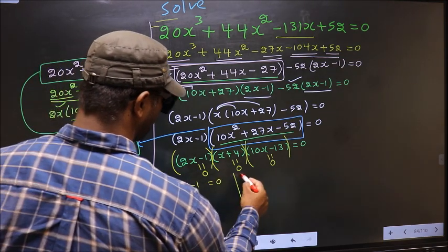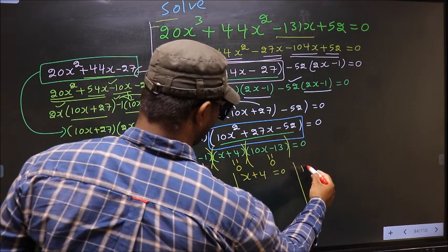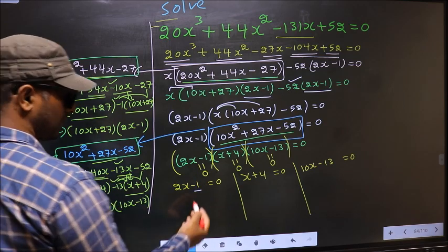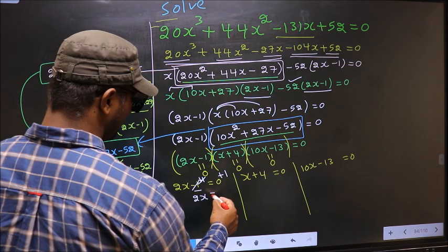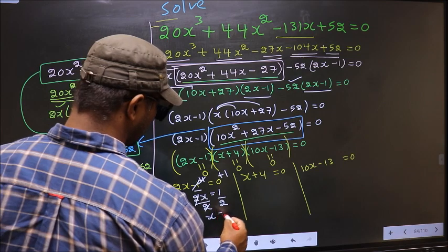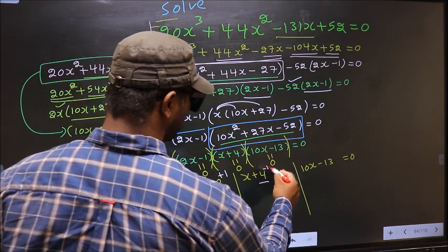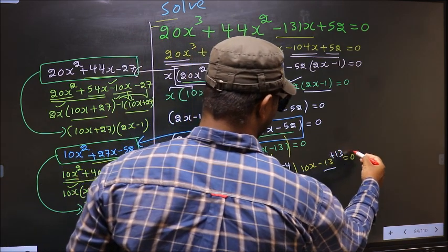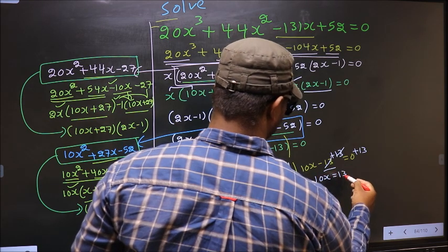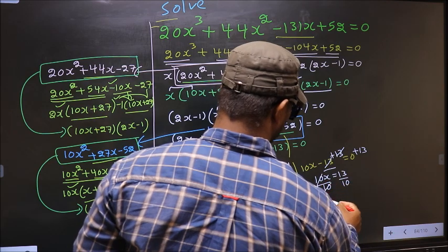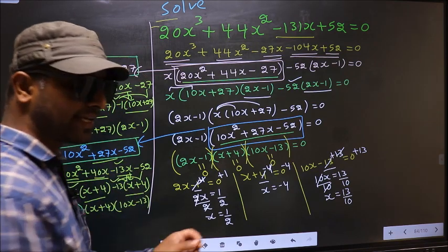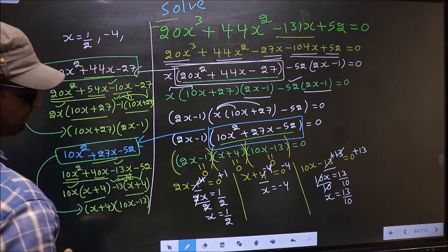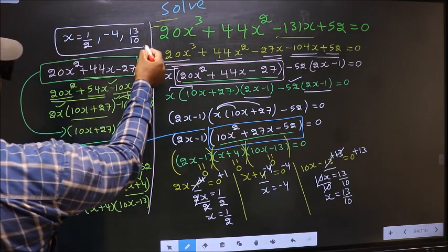Setting 2x - 1 = 0: add 1, then divide by 2, giving x = 1/2. Setting x + 4 = 0: subtract 4, giving x = -4. Setting 10x - 13 = 0: add 13, then divide by 10, giving x = 13/10. So the x values are 1/2, -4, and 13/10.